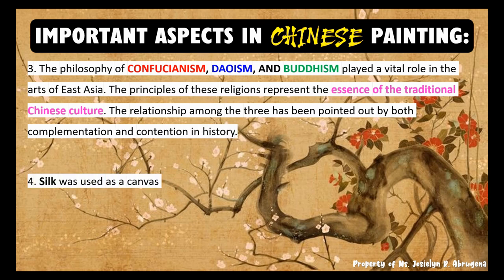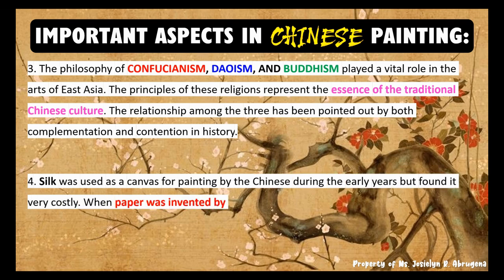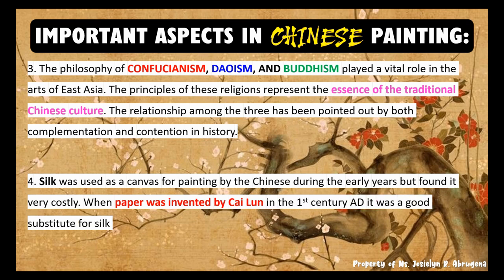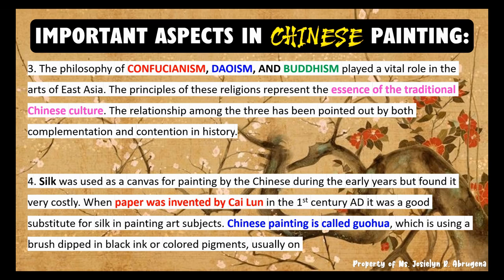Fourth, silk was used as a canvas for painting by the Chinese during the early years, but it was found to be very costly. When paper was invented by Cai Lun in the first century AD, it became a good substitute for silk in painting art subjects. Chinese painting is called guohua, which uses a brush dipped in black ink or colored pigments, usually on paper or silk.